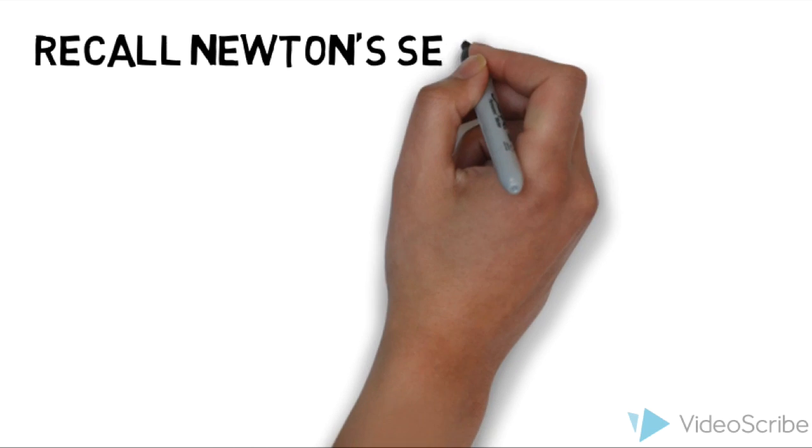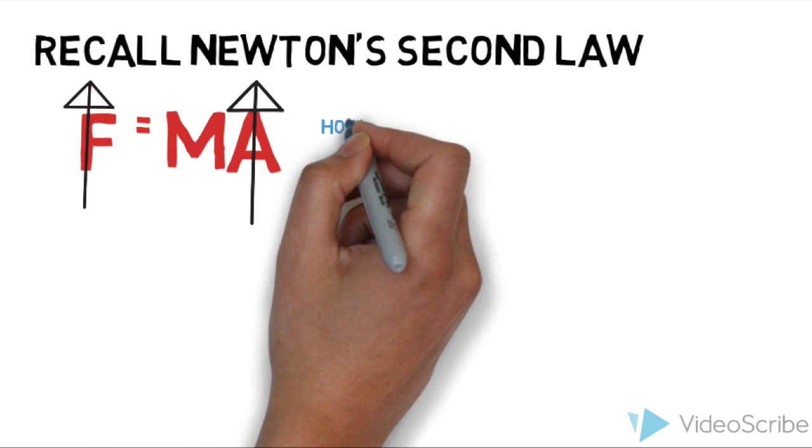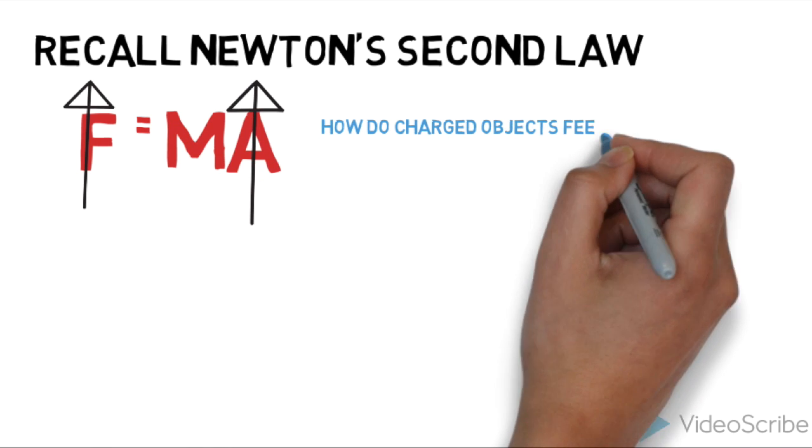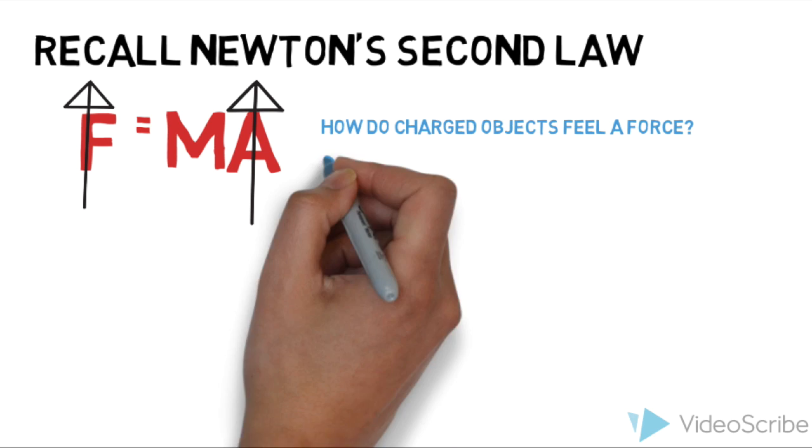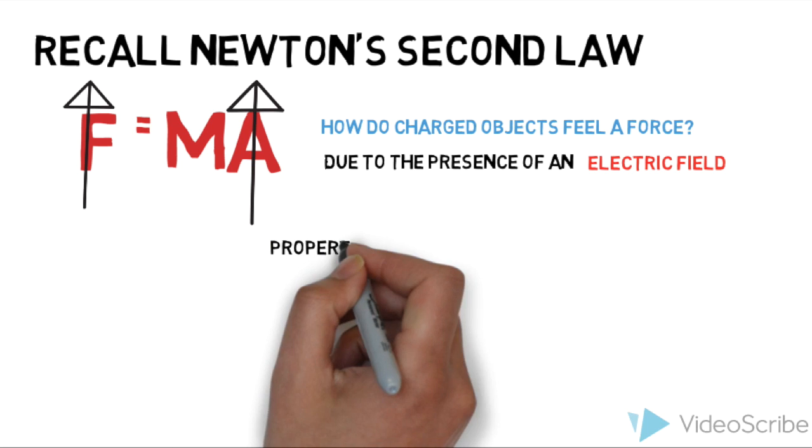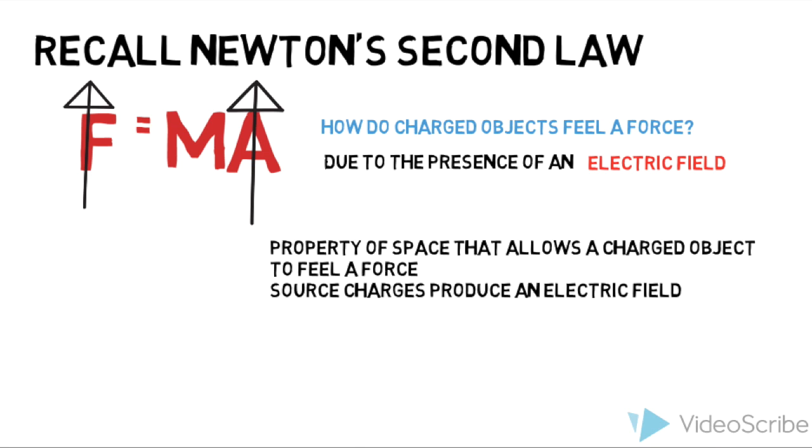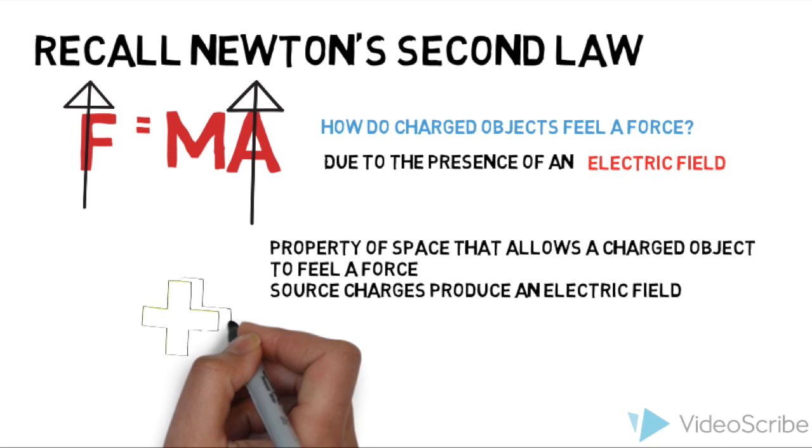Now I would like you to recall from Newton's second law that acceleration is directly proportional to the net force acting on an object. The electrostatic force causes the objects to accelerate. How do charged objects feel a force? The presence of an electric field enables a charged object to feel a force. The electric field is just a property of space that allows a charged object to feel a force because of the presence of something we call a source charge.